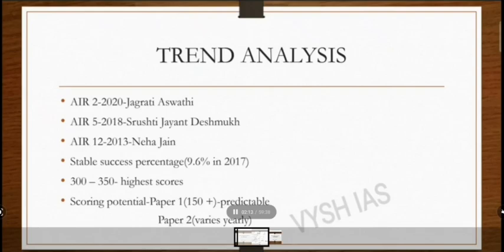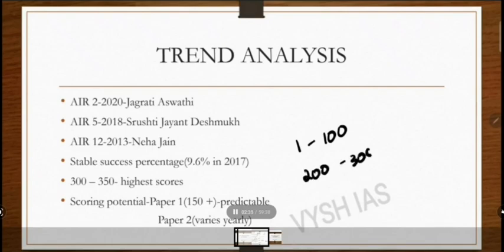We can attribute their success to a large extent to the strength of their optional, which is sociology. It's such a safe optional to proceed with. You just need to put in a little hard work, and you can certainly clear the subject and get a top rank. Many candidates are getting high marks within all rank ranges — rank 1 to 100, and even 200 to 300. You can score more than 300 in this subject, which helps your overall rank greatly.